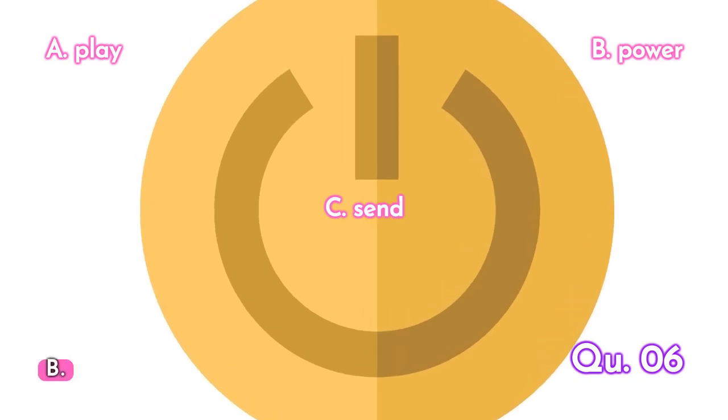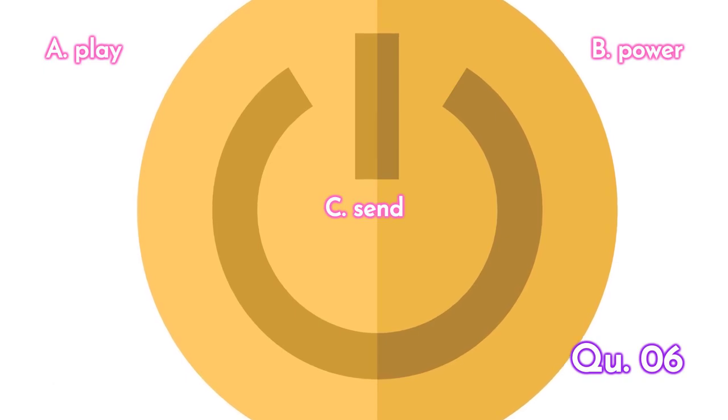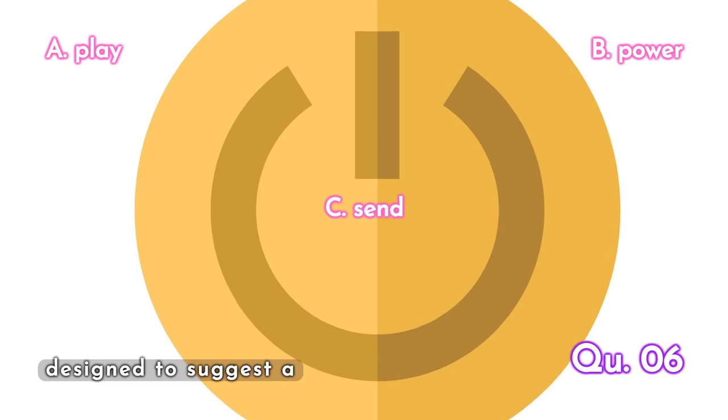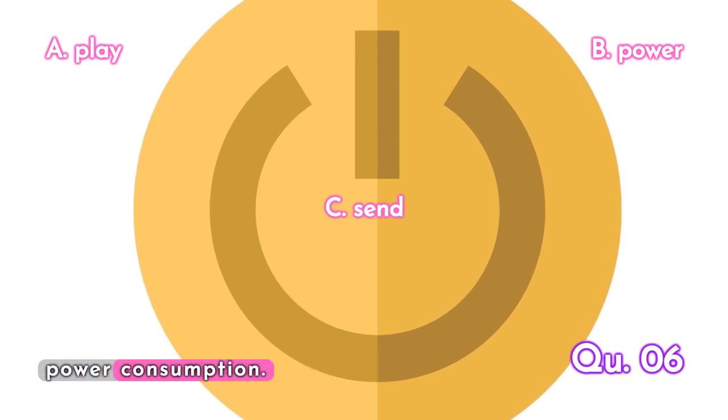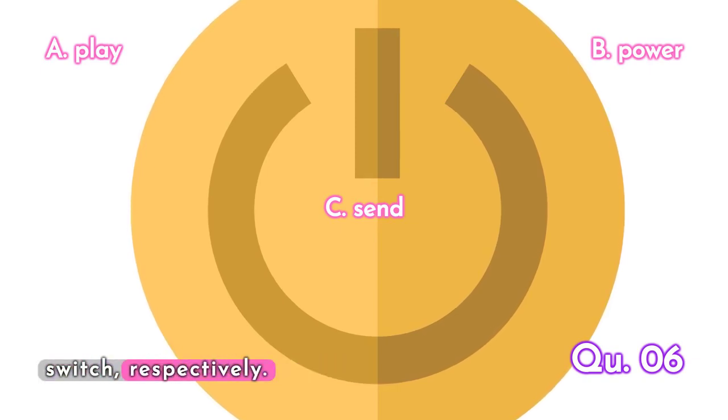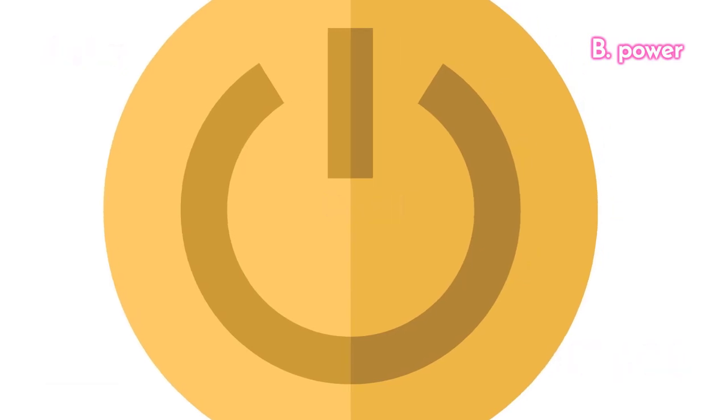The answer is B. Power. Initially this symbol was designed to suggest a standby or sleep mode of low power consumption. It combines a straight vertical line and a circle, which are typically used for on and off positions on a switch respectively.